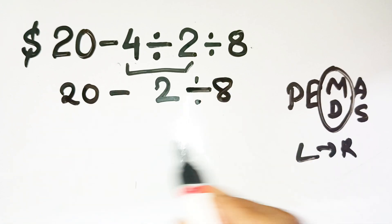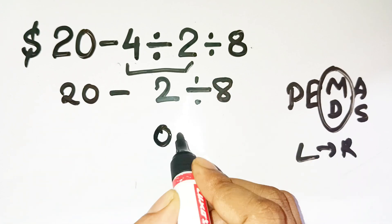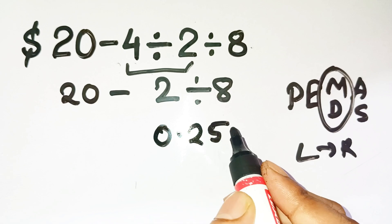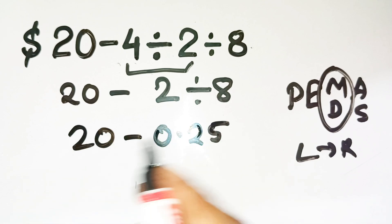Next, we continue left to right. 2 divided by 8 equals 0.25. So now we're left with 20 minus 0.25. And that gives us 19.75.